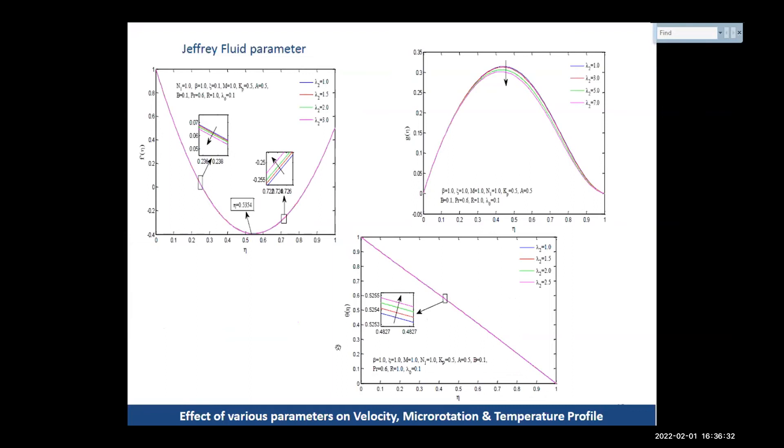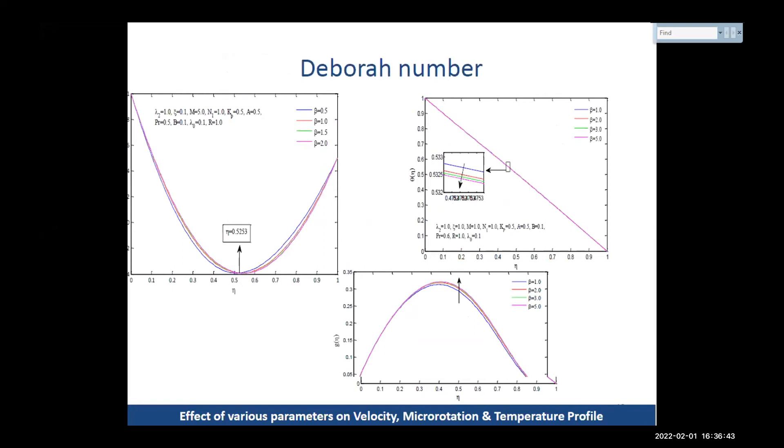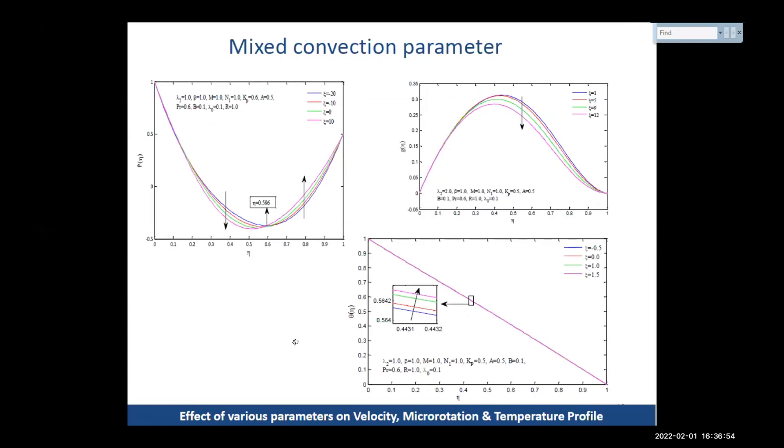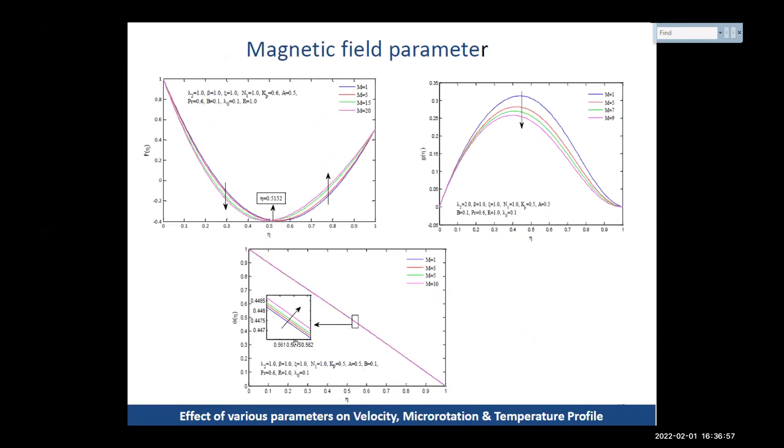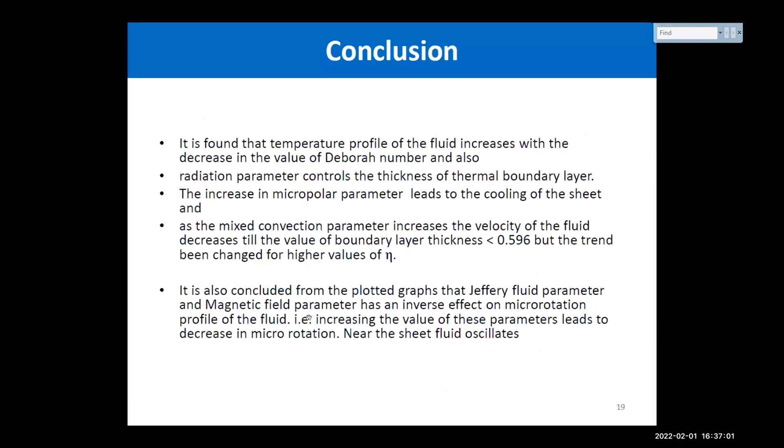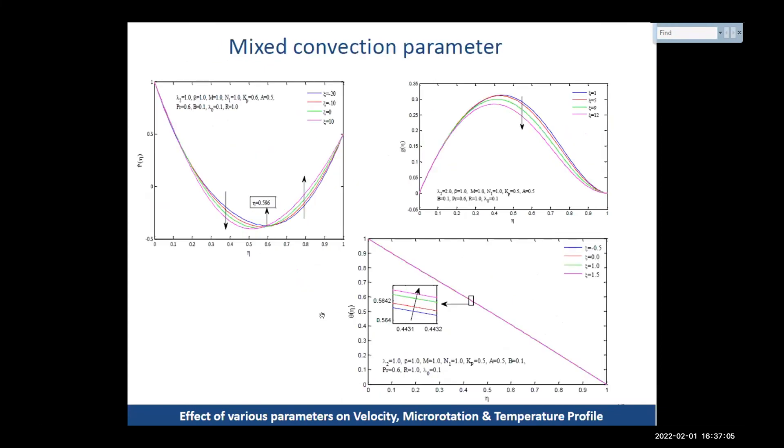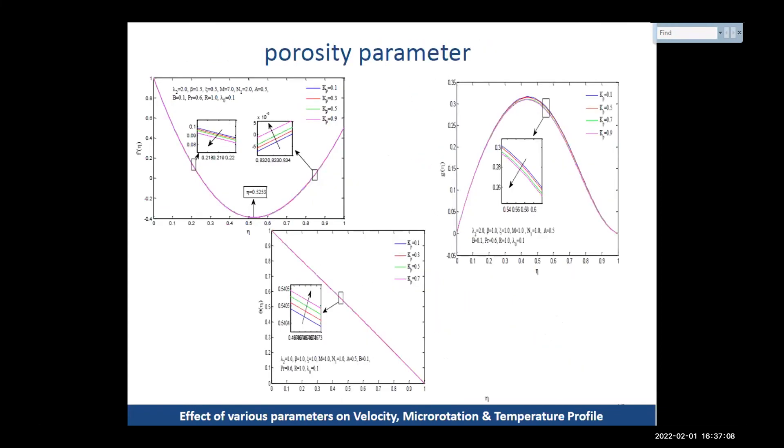Here are the graphs for the Jeffrey fluid parameters showing effect on velocity profile, micro rotation profile, and theta is the temperature profile. It is showing that with the increase in the value of lambda 2, the temperature is also increasing. Here is the effect of Deborah number. All the graphs have been drawn. Basically, graphical discussion has been there in my paper.